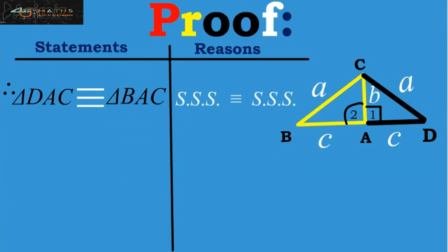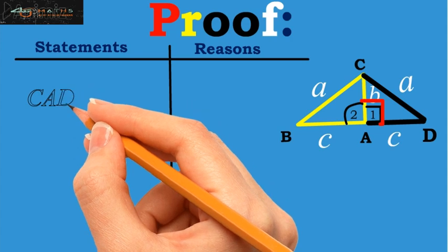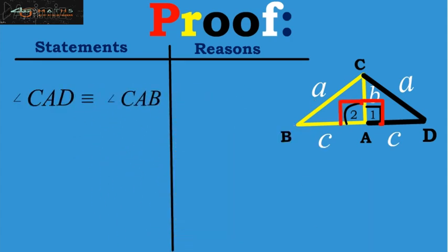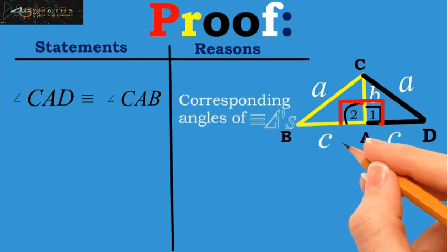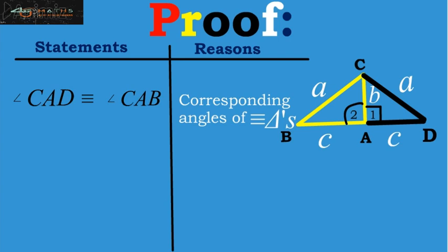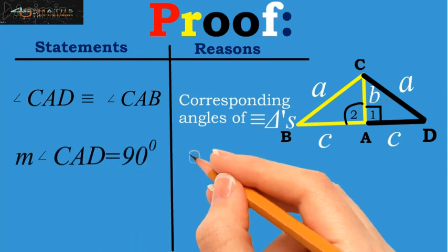Since we have proved that the triangles are congruent, so by the definition of congruency, the corresponding angles of these triangles will also be congruent. So we conclude that the angle CAD is congruent to the angle CAB. The reason for this is the corresponding angles of the two congruent triangles. But we have supposed in the construction that measurement of angle CAD is right angle that is 90 degree.